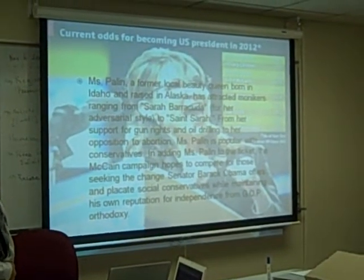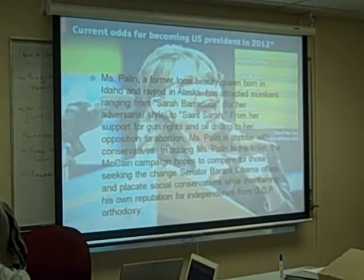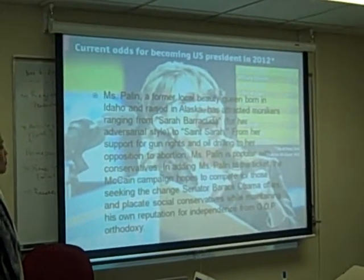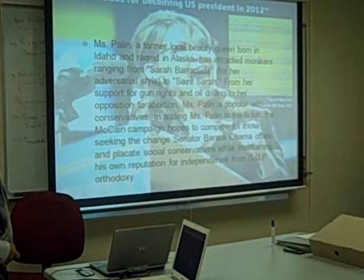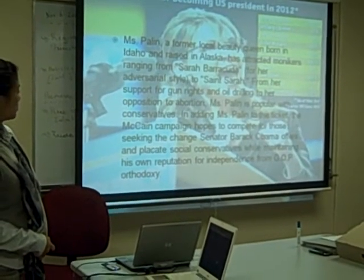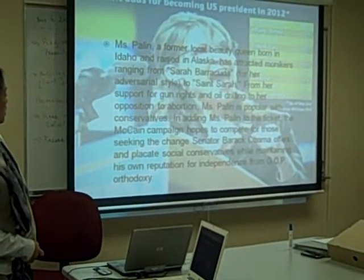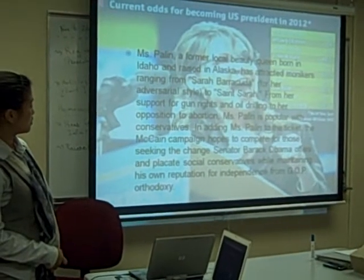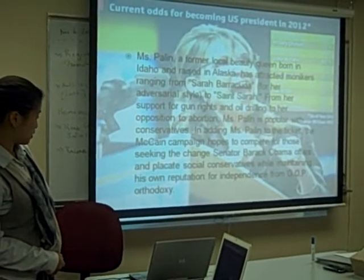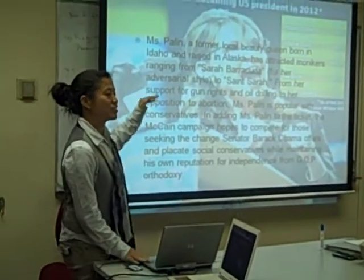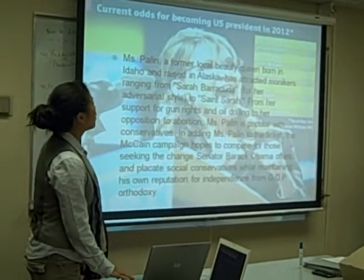Who can read this out for me? Thomas, please go ahead. 'Miss Palin, a former local beauty queen born in Idaho and raised in Alaska, has attracted monikers ranging from Sarah Barracuda, from her adversarial style, to Saint Sarah. From her support for gun rights and oil drilling to her opposition to abortion, Miss Palin is popular with conservatives. In adding Miss Palin to the ticket, the McCain campaign hopes to compete for those seeking the change Senator Barack Obama offers and placate social conservatives while maintaining his own reputation for independence from GOP Orthodoxy.' Thanks for your nice speech. Obviously, this is kind of high register and uses very academic words. And of course, it is from the New York Times.